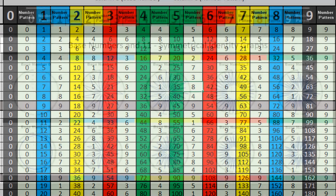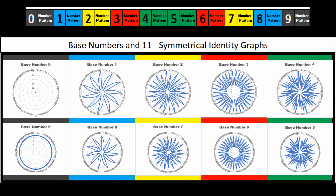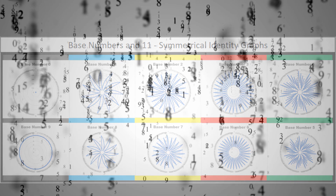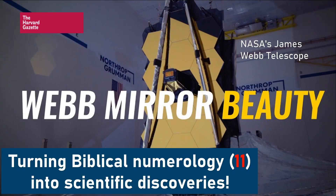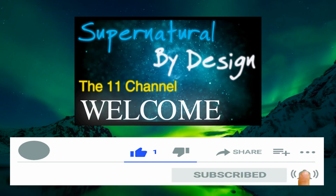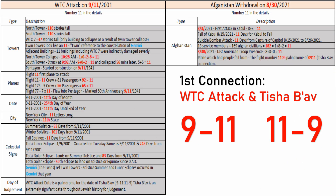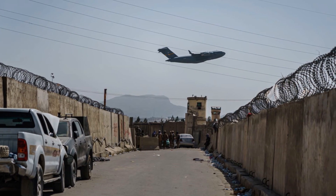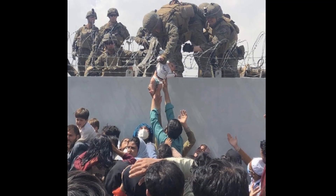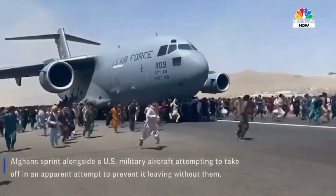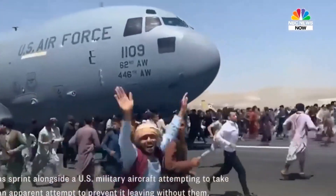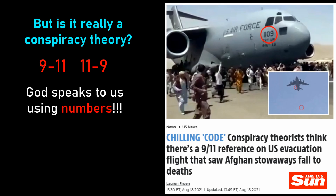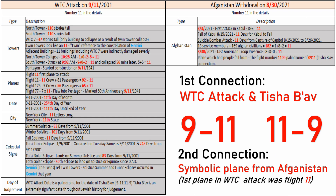This 9/11 and 11/9 symmetrical connection is fascinating — and it shows up in the very digits of mathematics, where base numbers create symmetrical patterns all the way down, as you can see on the chart on screen. One more unique connection to this palindrome: the infamous plane everyone saw as the Afghanistan withdrawal was underway — the number on it was 11/9 — again highlighting that symmetrical connection to 9/11.